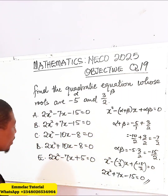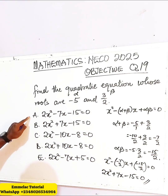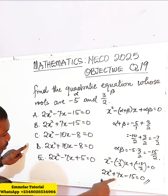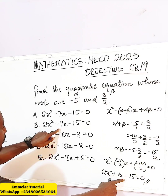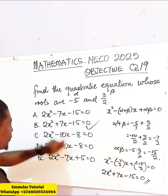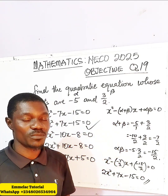Final answer: 2x squared plus 7x minus 15 equals 0. Be careful with the plus and minus signs. Thank you and God bless you.